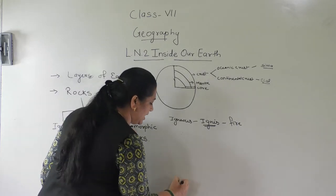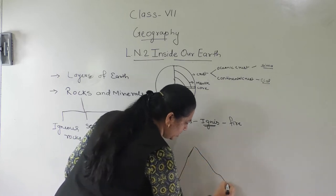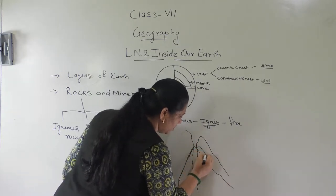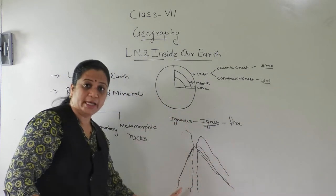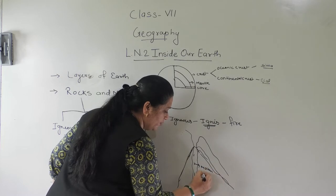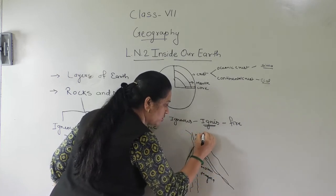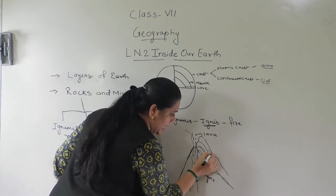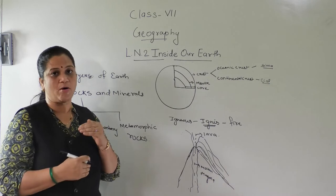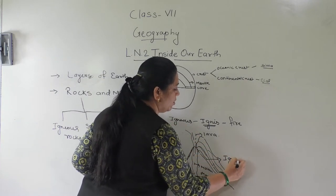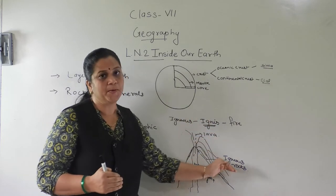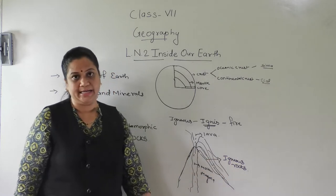The word 'igneous' has been derived from the Latin word 'igneus', which means fire. So these are rocks formed by fire. Whenever the earth gets ruptured, the hot molten magma which comes out from the inner core of the earth to the surface is called lava. When this lava comes in contact with the cold air and gradually cools down, the rocks thus formed are called igneous rocks.